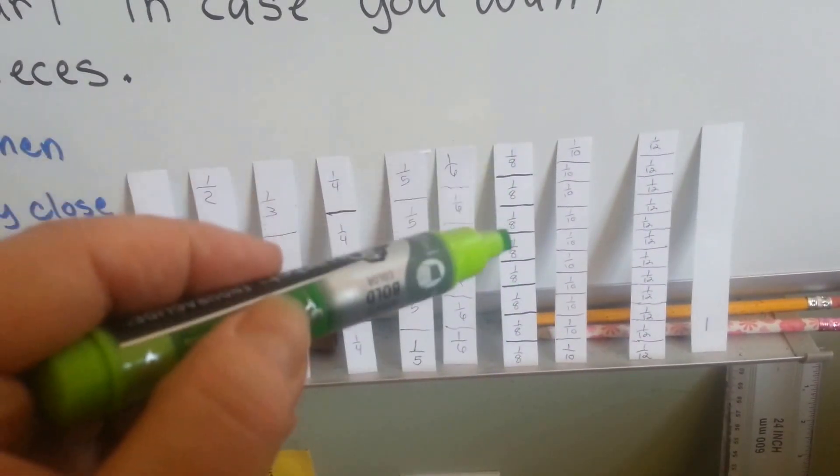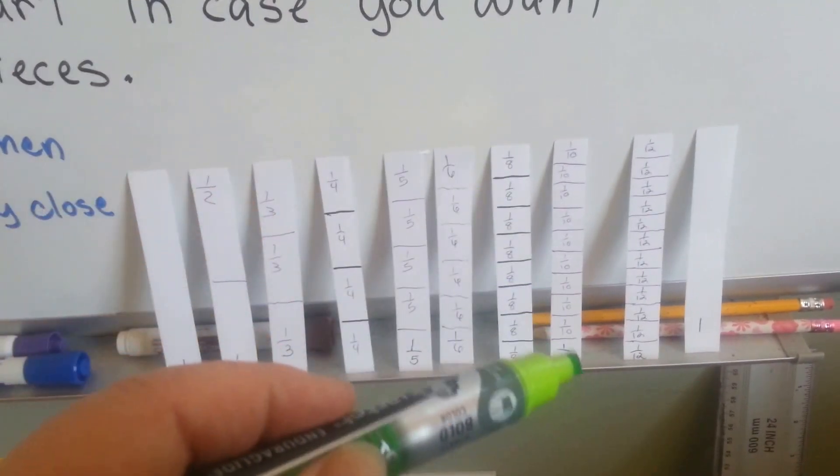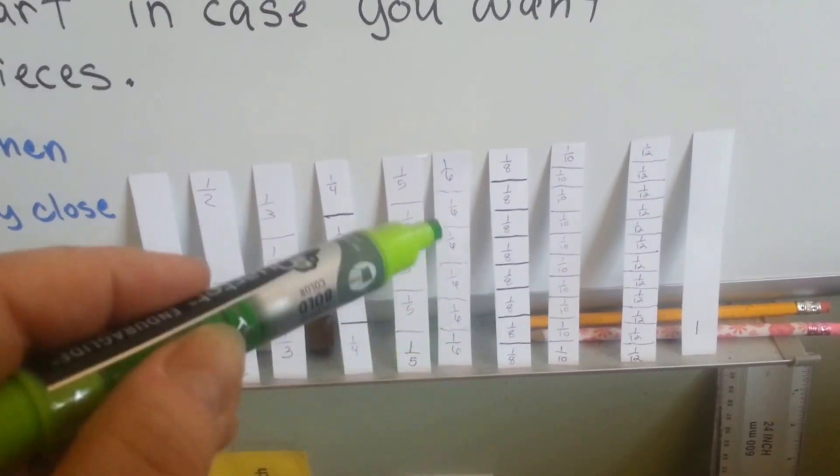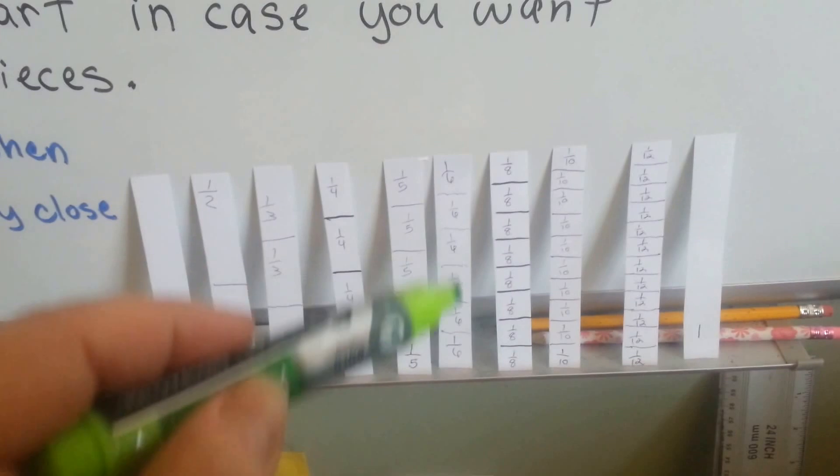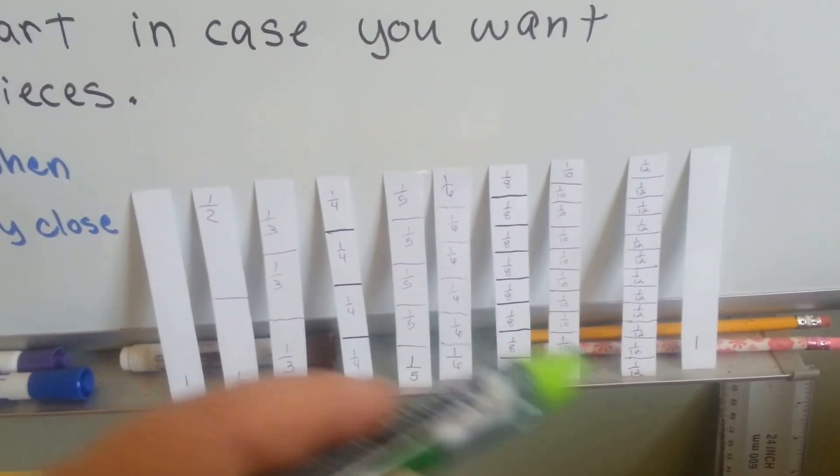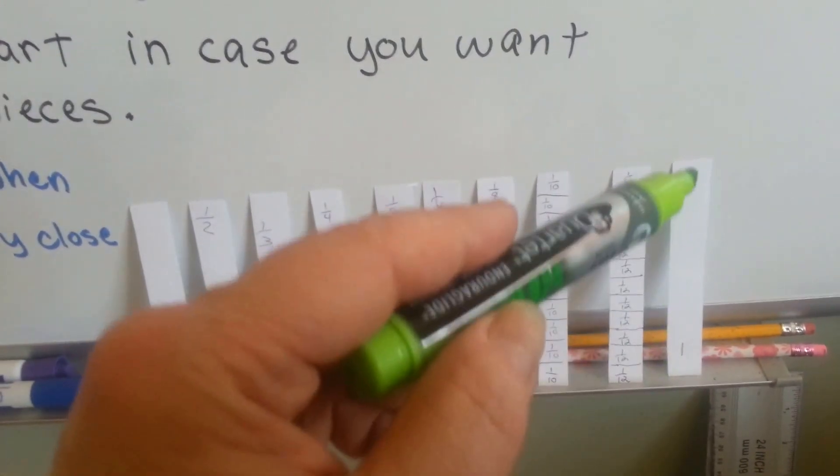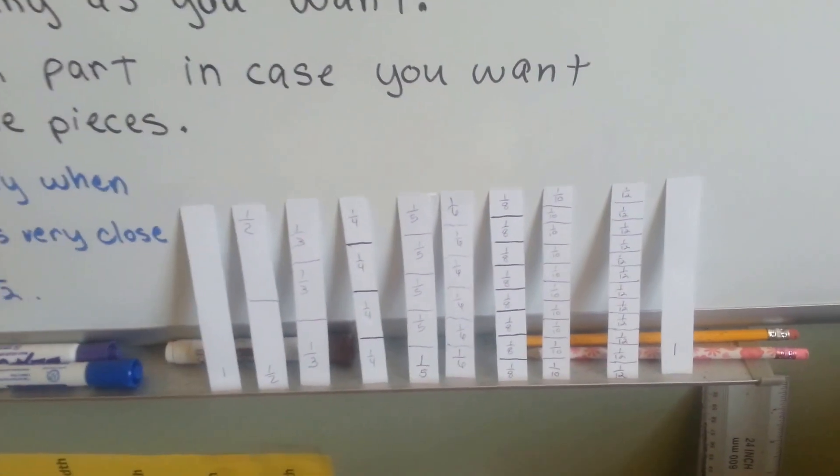I'm going to add three of these 1 eighths, 3 eighths, to 4 sixths. And you'll be able to take four of the little 1 sixth pieces, and you'll be able to compare it to a one whole one, and see what you've got.